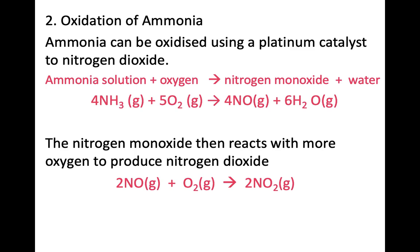The second reaction that ammonia takes part in is oxidation. We can oxidise ammonia using a platinum catalyst, and when we do so it becomes nitrogen dioxide. The equation for our reaction is: ammonia plus oxygen gives nitrogen monoxide and water. What then happens is the nitrogen monoxide reacts with more oxygen to produce nitrogen dioxide. So in the process of oxidation, ammonia becomes nitrogen monoxide and finally nitrogen dioxide. This reaction is very important for the Ostwald process, which is what we are going to talk about next.